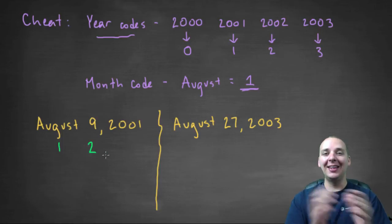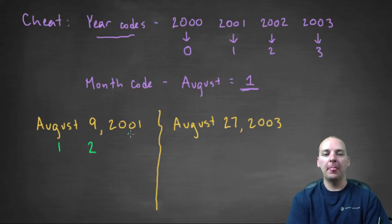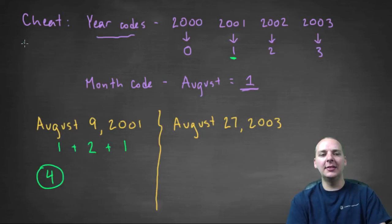Because whatever day the ninth fell on, the second was the same day. So the day code is a two, and 2001's year code is a one. One plus two plus one makes four.